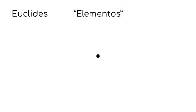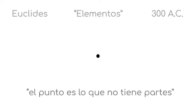En este plano dibujo un punto. Según Euclides, un matemático y geómetra griego, en su libro Elementos del año 300 a.C., define: el punto es lo que no tiene partes.